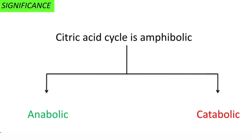Coming to significance, the citric acid cycle is called amphibolic in nature because it has both anabolic function and catabolic function. Now we will see details of each function.